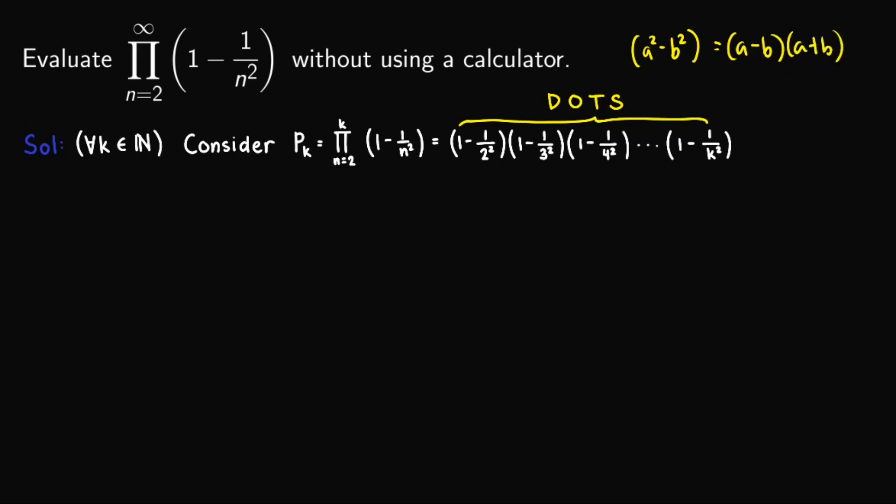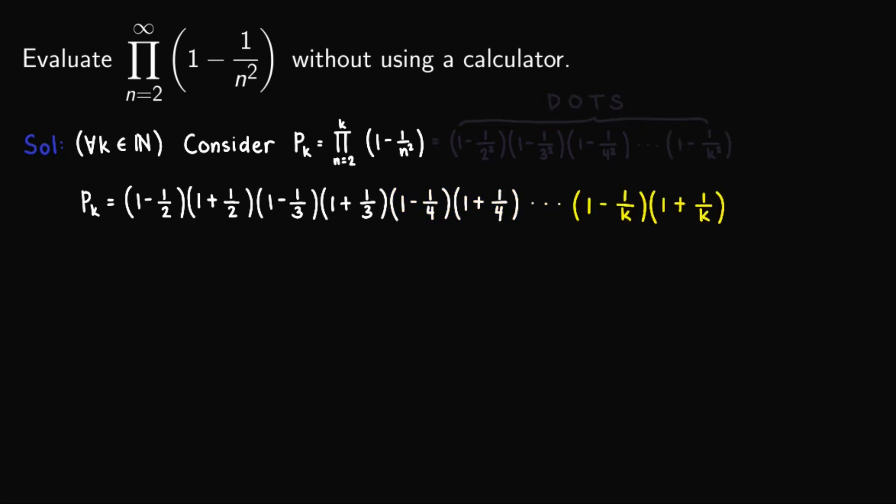So applying this idea out here, we'll have p sub k to be equal to 1 minus 1 half times 1 plus 1 half, 1 minus 1 third times 1 plus 1 third, 1 minus 1 fourth times 1 plus 1 fourth, and so on until 1 minus 1 over k times 1 plus 1 over k. And so we obtain this.